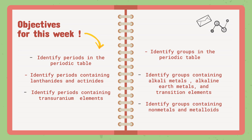We are also going to know the periods that contain transuranium elements. We will also identify the groups in the Periodic Table. So we have periods and groups. As for the groups, we are going to identify groups containing alkali metals, alkaline earth metals, transition elements, non-metals, and metalloids.